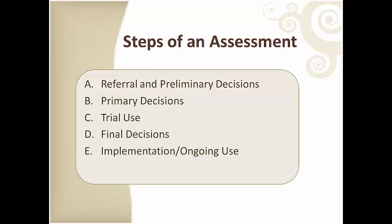Now let's discuss the parts of an assessment. An assessment should always start with a referral and an IEP team making preliminary decisions about what the main concerns are, who else may need to be involved in the process, and when and where additional information will be gathered. Primary decisions are those made about the student, environments, tasks, and AT tools that may be needed. This leads to a trial of potential AT tools, with final decisions about what AT will work being based on data collected during the trial.